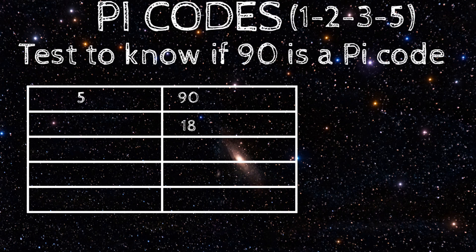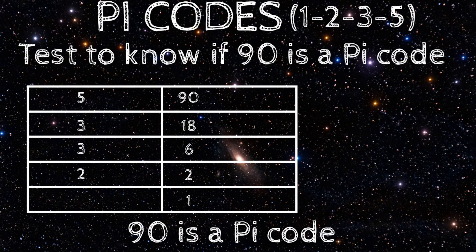I'll use four examples for you to understand better. You have to use only the zodiac numbers for division. Let's see if 90 is a pi code. You can start with any of the three zodiac numbers. Starting with 5, 5 divide 90 gives 18. 5 can't divide further, so we use either 2 or 3. I'm using 3. 3 divide 18 gives 6. 3 divide 6 gives 2. 2 divide 2 gives 1. The division ends in 1, so 90 is a pi code.